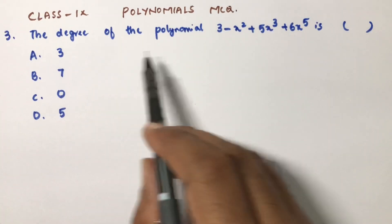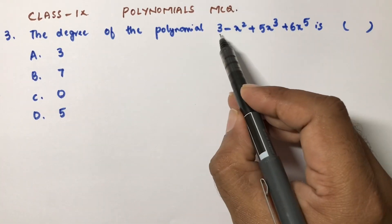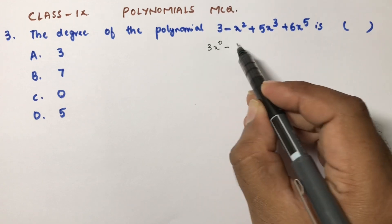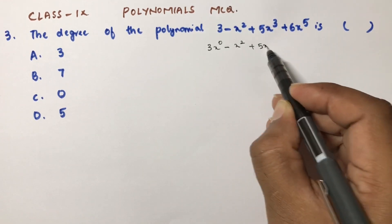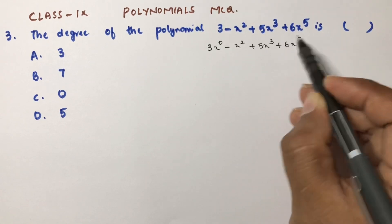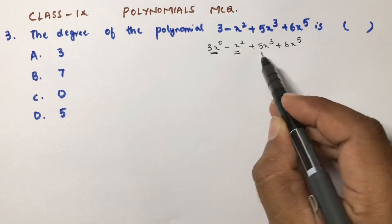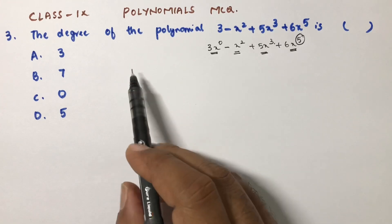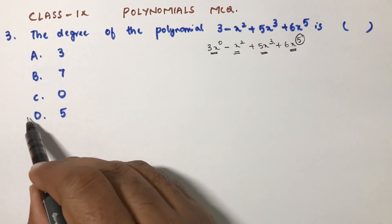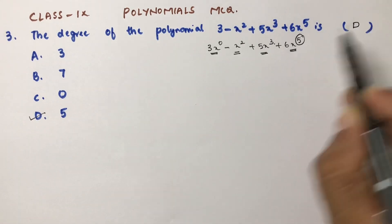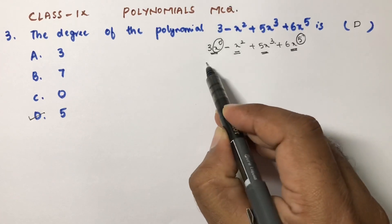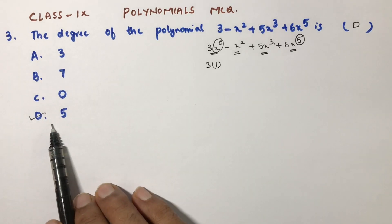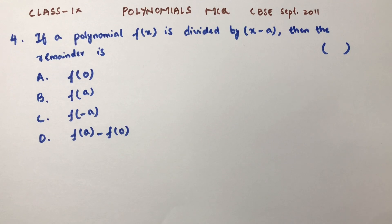The degree of the polynomial 3 - x² + 5x³ + 6x⁵: degree is the highest power of the variable. We can write 3 as 3x⁰. So the powers are 0, 2, 3, and 5. The highest power is 5, so the degree is 5. The correct option is D. Note: x⁰ = 1, so 3·x⁰ = 3.